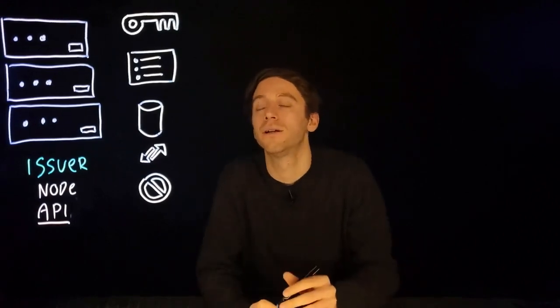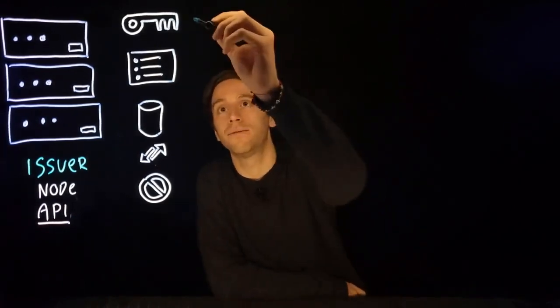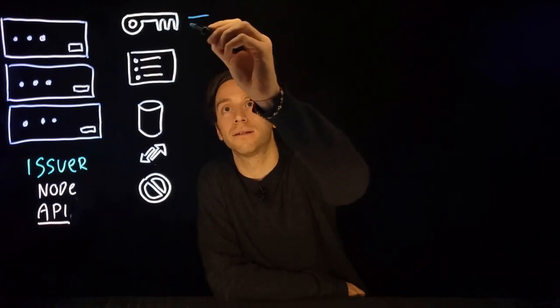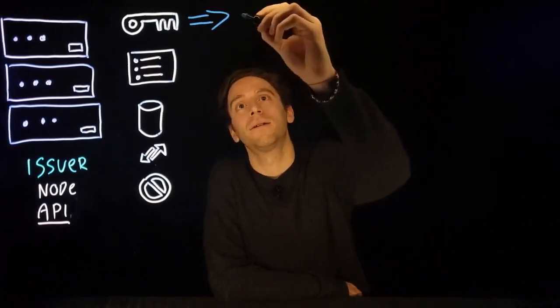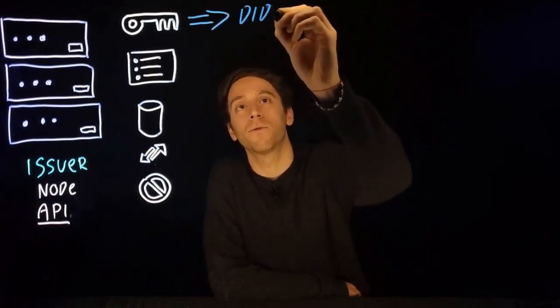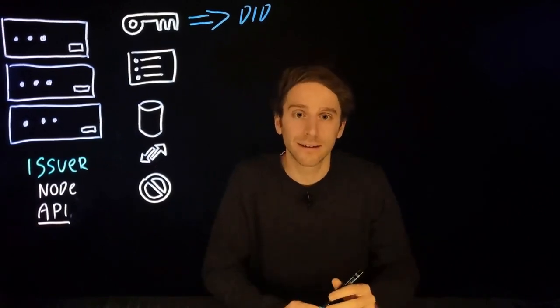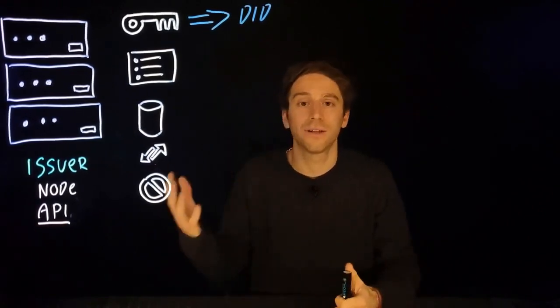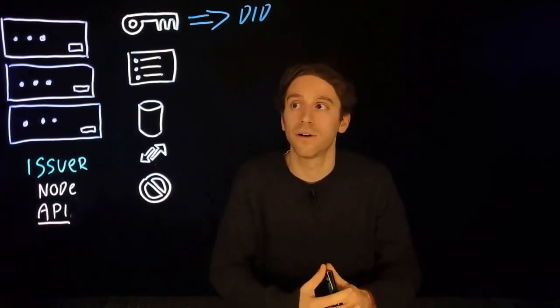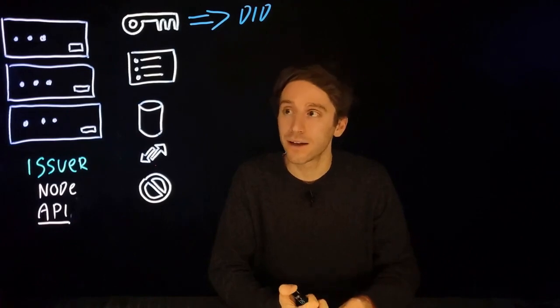The first API is one to create the private key for the issuer. The private key is what allows you to control your identity and to authenticate as an issuer. From this private key there is a DID, which is a public and unique identifier that is only associated with you as an issuer.